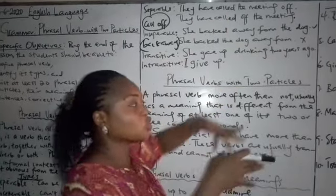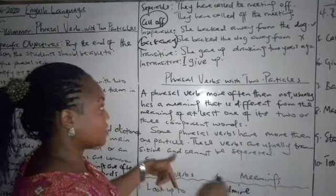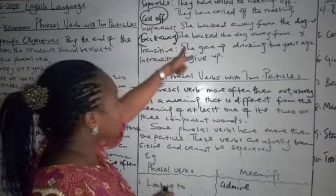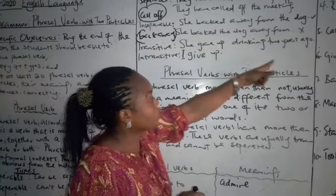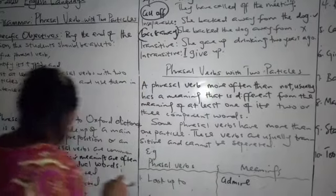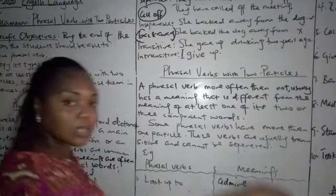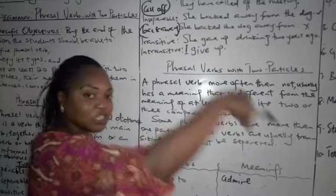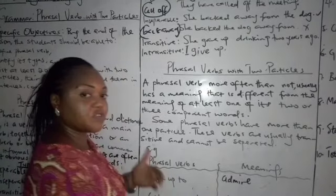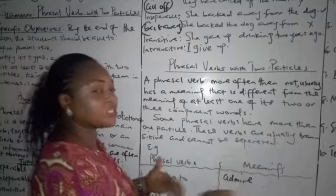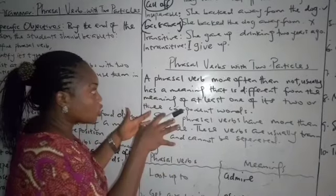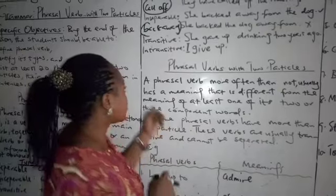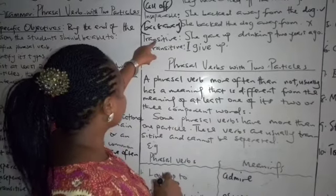We will stop here because we are going to do something for today's lesson. We have a transitive phrasal verb. She gave up drinking two years ago. Transitive means that it acts on an object. For a verb to be transitive, it means it is acting on an object. If it does not act on an object, then it is intransitive. For that also, it depends on the context.